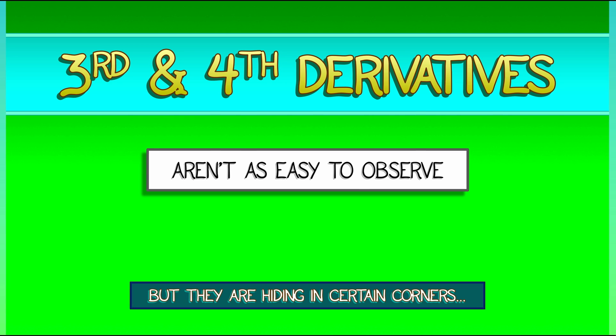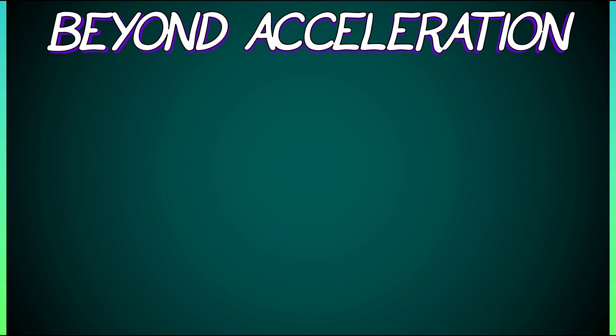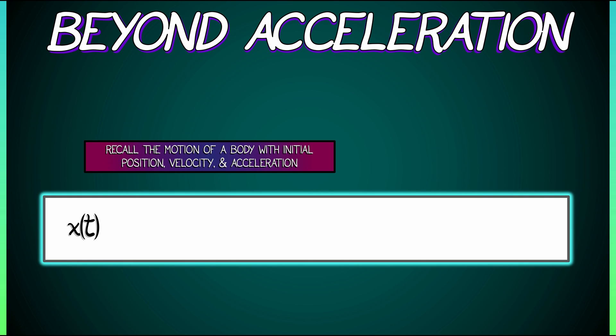Let's take a look, starting with the motion of a particle or a solid body. If we recall how that works, where you have an initial position, an initial velocity, an initial acceleration, then we had x of t, the position as a function of time,